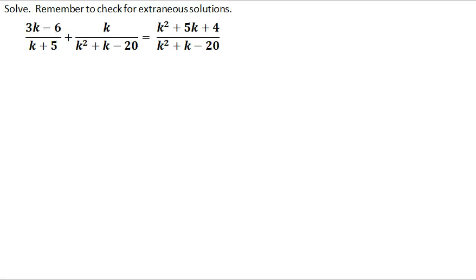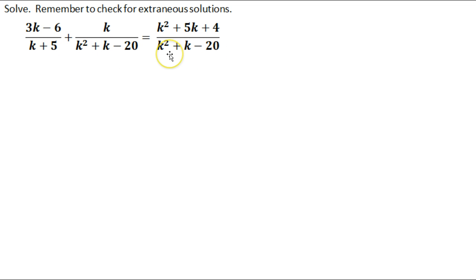In this video, we're going to be solving this rational equation. Basically what we're trying to determine is the value of k. We've got a lot of k's on top and bottom. So the first thing that we need to determine is what our lowest common denominator is. I know that I have a k plus 5 over here, and then a quadratic expression on the bottom on both of these two.